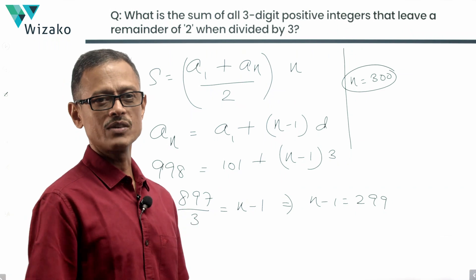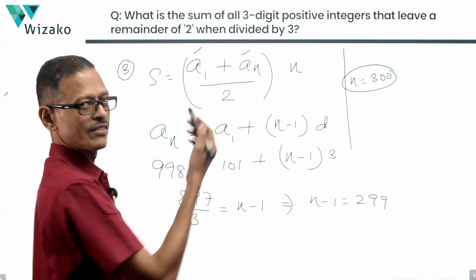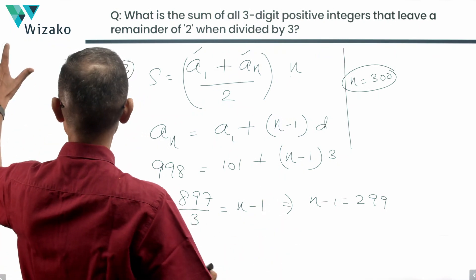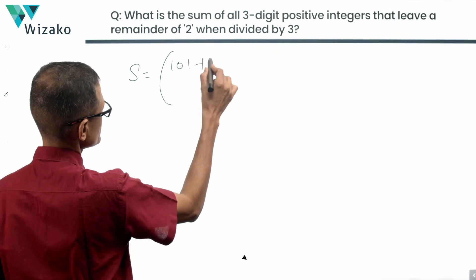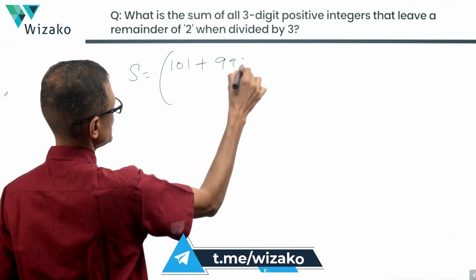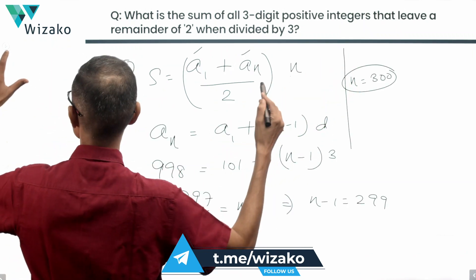So step 3, we have found out the number of terms in the sequence. We know this, we know this, we have computed this. So plug it in, compute, get the answer. Sum of the sequence is equal to the first term 101 plus the last term which is 998 divided by 2 into the number of terms, equal to 300.